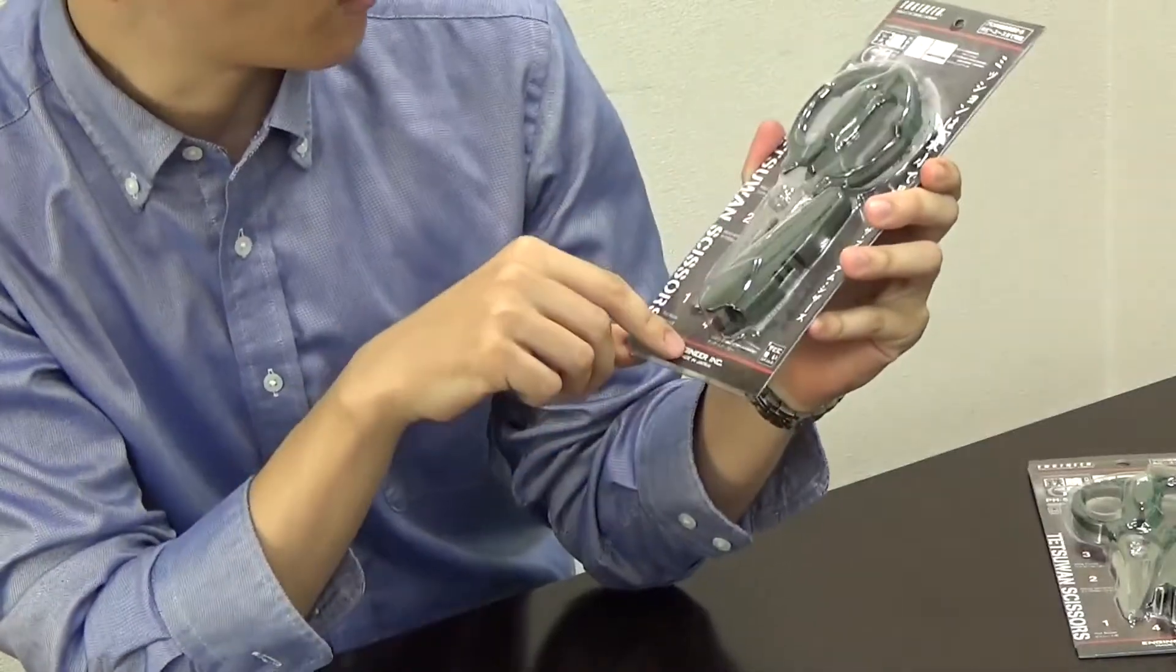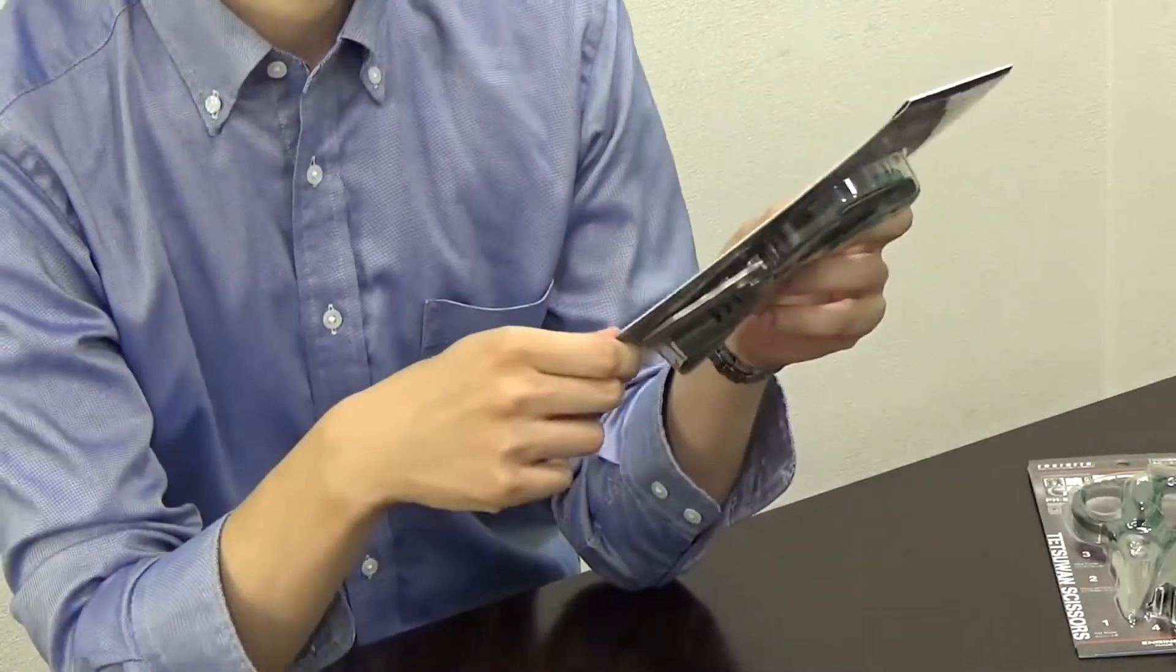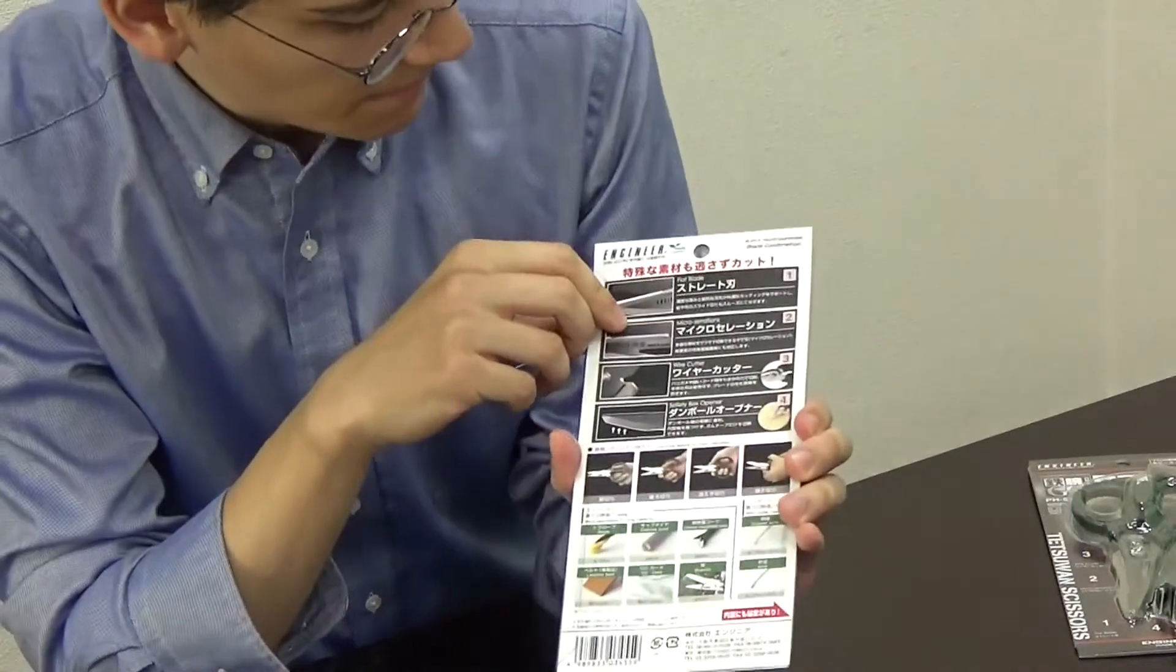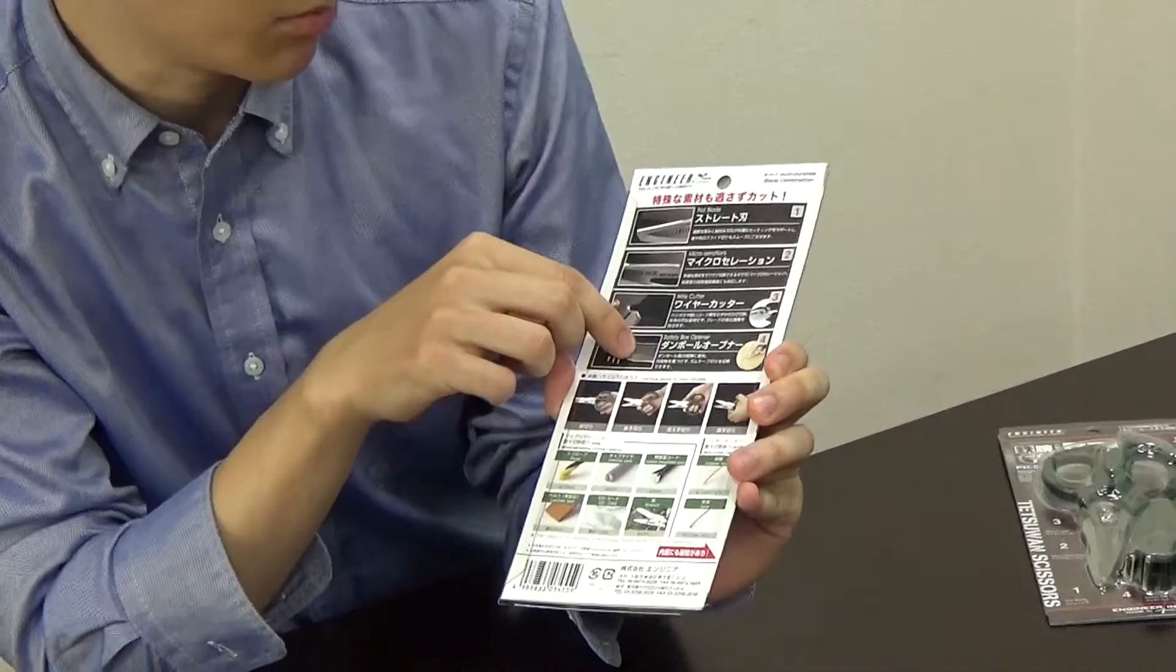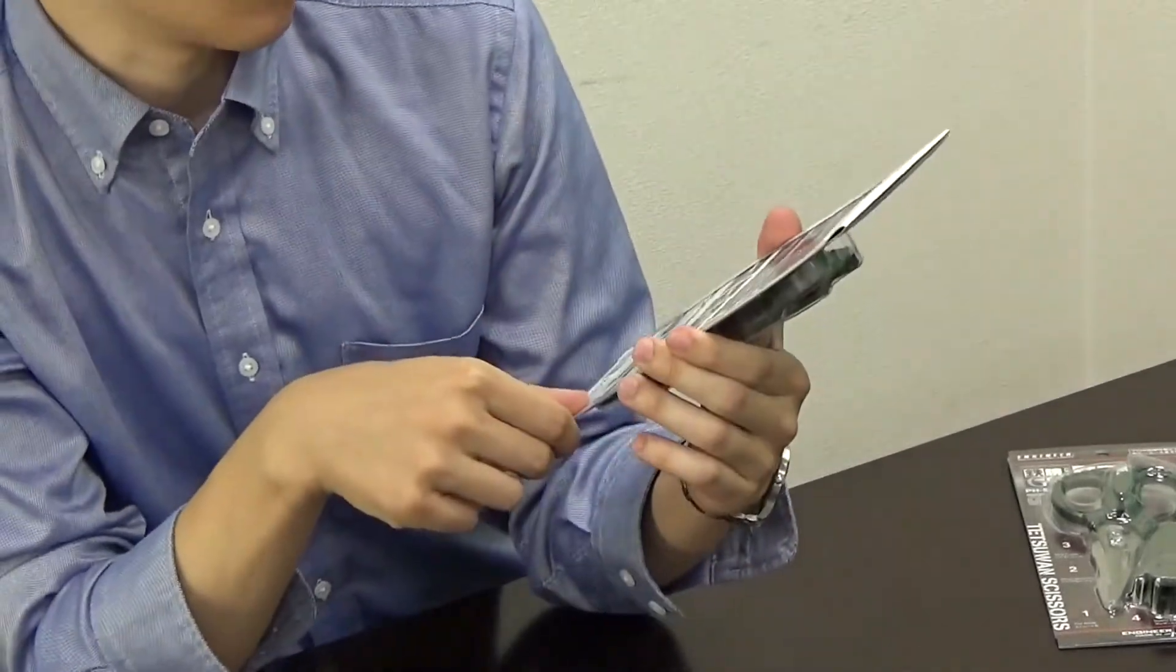One, two, three and four I see. Let's look on the rear. It says flat blade, micro serrations, wire cutter, safety box opener. Wow.